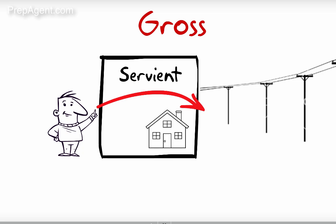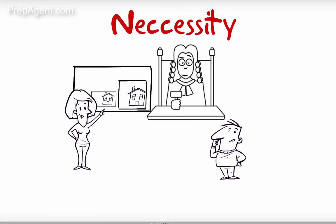A court order creates an easement by necessity to permit someone to gain access to a property. For example, say property owner A sells to buyer B a back portion of land but neglects to give buyer B an easement for access. If A refuses to give B the easement, B can go to court and have an appurtenant easement created.